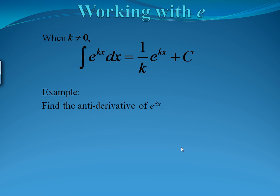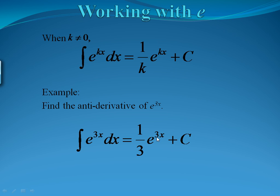For example, find the antiderivative of e to the 3x. We get the same thing back — e to the 3x — but in front we have 1 over whatever our constant is, which here is 3. So we have 1 third e to the 3x, plus c.